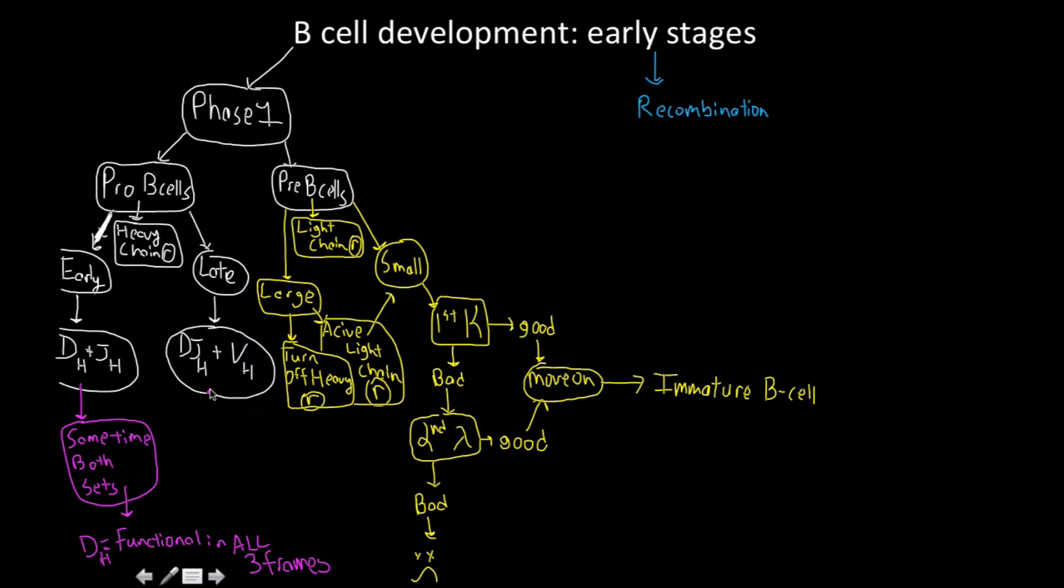For the later ones, these are going to be only one at a time. If that one doesn't work, then we'll move on to the other. If this is good, then we'll move on. If the first one was bad, then we can try the other. If the other is bad, then we're going to end up with apoptosis and die.